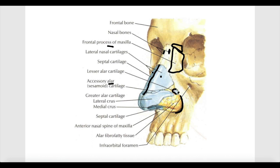We have small cartilages called the lesser alar cartilages and a larger one called the greater alar cartilage. Sometimes there is a small cartilage located between the lateral nasal cartilages and the greater alar cartilage, called the accessory alar cartilage.